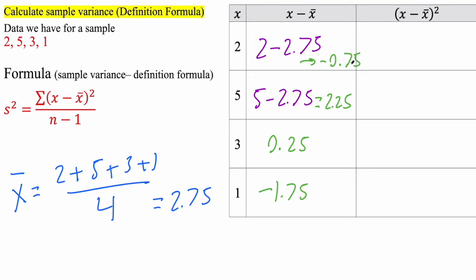So it tells us to square that piece. So what we're going to do is we take negative 0.75 and we square it, and we're going to get 0.5625. We do the same thing. We take this number, we square it, we get 5.0625.